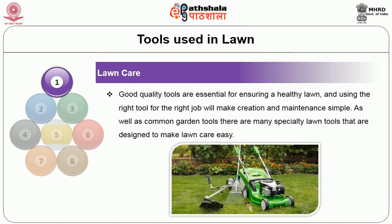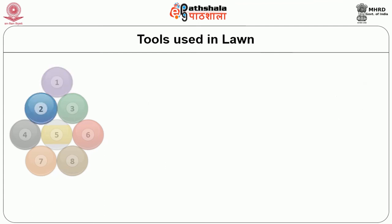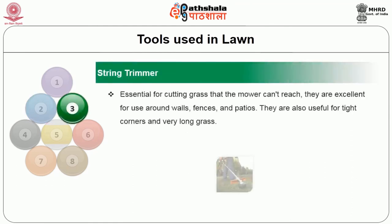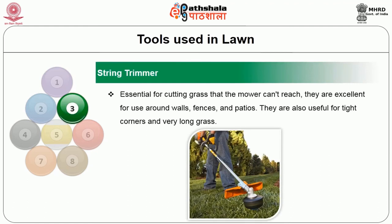Good quality tools are essential for ensuring a healthy lawn and using the right tool for the right job will make the creation and maintenance simple. As well as common garden tools, there are many specialty lawn tools designed to make lawn care easy. First is the lawn mower — the essential tool for any lawn. Different types are available with rotary or cylinder blades that collect grass clippings as they go. Mowers can be gas driven, more environmentally friendly types run on batteries, or push propelled. The second is the string trimmer, essential for cutting grasses that the mower can't reach and excellent for use around walls, fences and passages. They are also useful for tight corners and very long grasses.